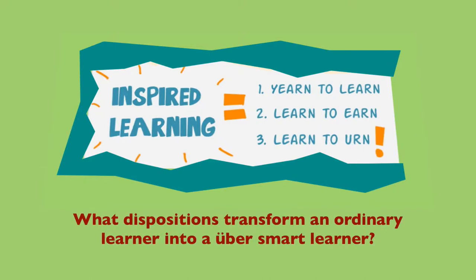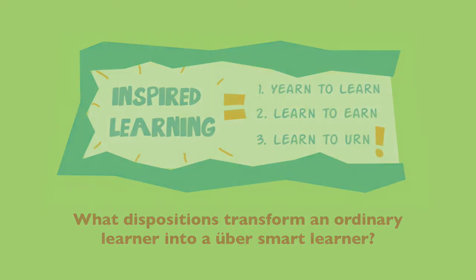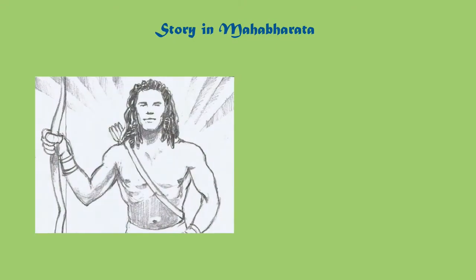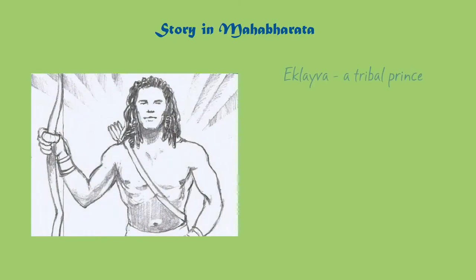What dispositions or qualities of the mind transform a learner into a self-directed, autonomous learner? The Indian epic Mahabharat has the story of Eklavya, a tribal prince.